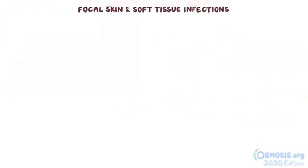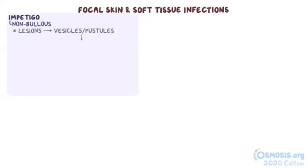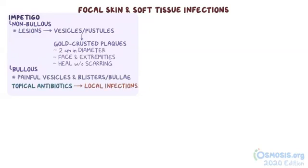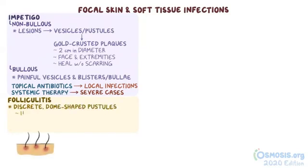As a quick recap: in non-bullous impetigo, the lesions start as vesicles or pustules and evolve into gold-crusted plaques, often 2 cm in diameter, usually affecting the face and extremities and healing without scarring. Bullous impetigo is characterized by painful vesicles and blisters or bullae that spread rapidly. Topical therapy with antibiotics can be used for local infections, but systemic therapy is needed for severe cases. Folliculitis results in discrete, dome-shaped pustules that involve the hair follicle of the scalp, buttocks, and extremities, and improves with topical antibiotic therapy.